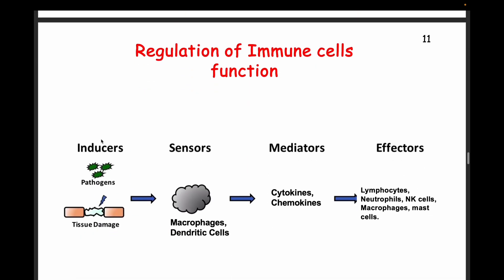For the regulation of immune cells, we have a pathogen or inducer that causes tissue damage. The macrophages and dendritic cells are the sensory cells — the cells that sense that something is wrong. The macrophages are activated to engulf pathogens and secrete cytokines and chemokines. The dendritic cells capture the antigen and go to the lymph nodes to present it to B cells and T cells to activate the adaptive immunity. The effectors include lymphocytes (adaptive immunity), neutrophils, natural killer cells, macrophages, and mast cells — all innate immunity.